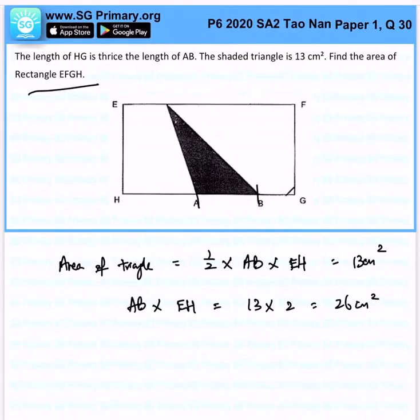We know that the rectangle is going to be 3 times the length of AB. That is for the length. But how about the breadth? The breadth would actually remain the same, so it will just be 3 times AB times EH.